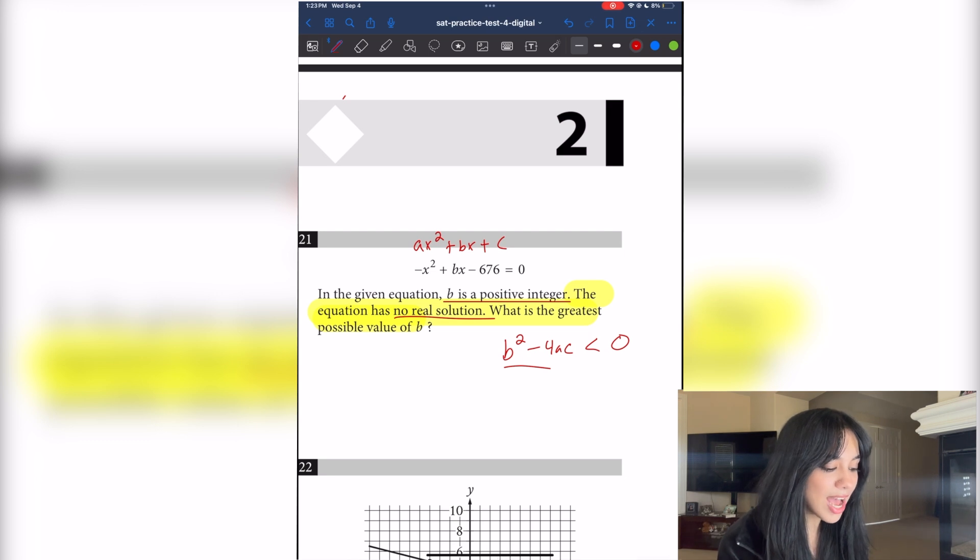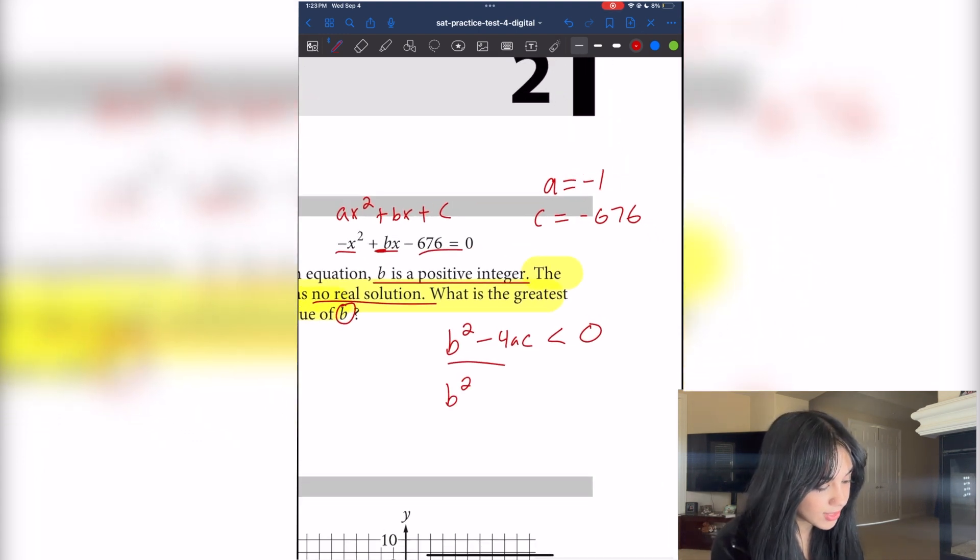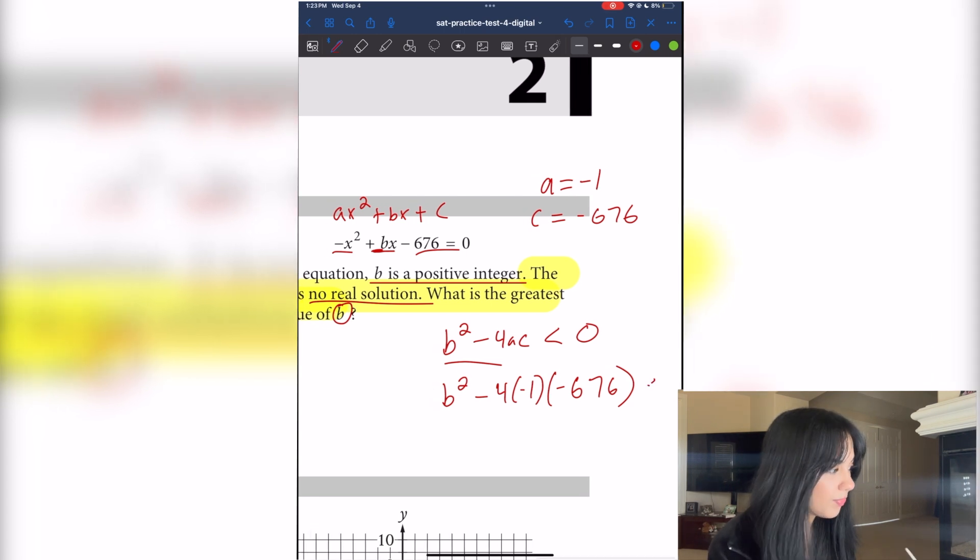That is derived from the quadratic formula. And there's a lot of rules that come with the discriminant. But as I said, this says it's no real solution. So that means that this is less than 0. It's negative. From here, I noticed that we have our values for a, b, and c. So we can plug those in to our discriminant. I see that a equals negative 1. We don't know what b is. And then c equals negative 676. Makes sense that we don't know b since that's what we are solving for. So now we can plug in these values. So b squared minus 4 times negative 1 times negative 676 is less than 0.